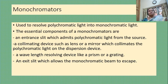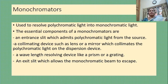Monochromators are used to resolve polychromatic light into monochromatic light. The essential components of a monochromator are: an entrance slit which admits polychromatic light from the source; a collimating device such as a lens or mirror which collimates the polychromatic light onto the dispersive device; a wavelength resolving device like a prism or a grating; and an exit slit which allows the monochromatic beam to escape.